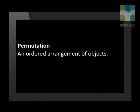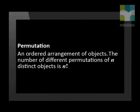An important application of the fundamental counting principle is determining the number of ways that n objects can be arranged in order, or in a permutation. A permutation is an ordered arrangement of objects. The number of different permutations of n distinct objects is n factorial, indicated with an exclamation mark.